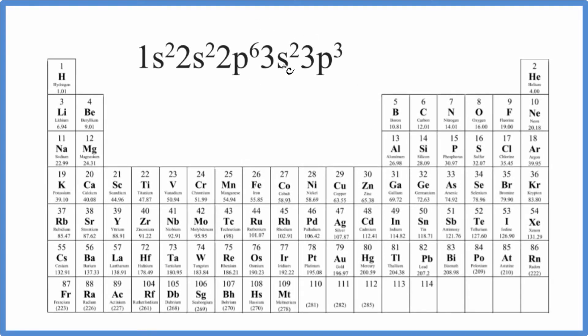The question is, which element does this electron configuration, 1s2, 2s2, 2p6, 3s2, 3p3, represent on the periodic table?